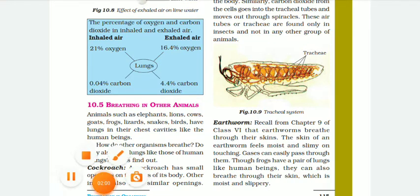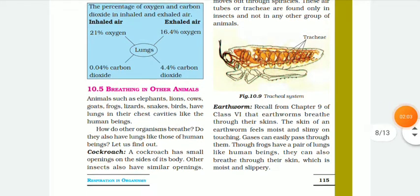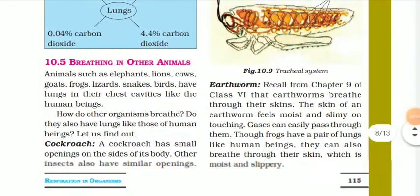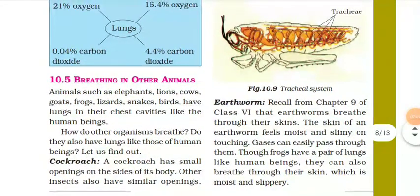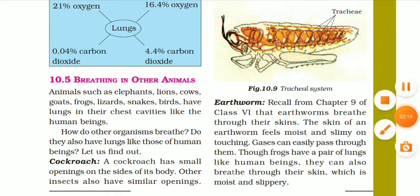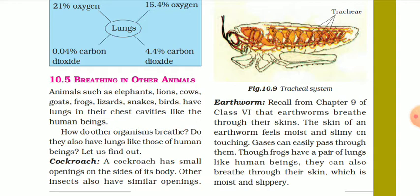Now let's read about breathing in other animals — about how other animals breathe. Animals such as elephant, lion, cow, goat, frog, lizard, snake, and bird have lungs in their chest cavities like human beings. So just like us, goat, frog, lizard, snake, bird, elephant, lion, and cow — all these animals have lungs, just like we do, and the process is similar.